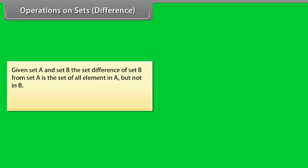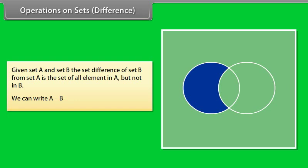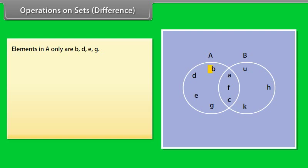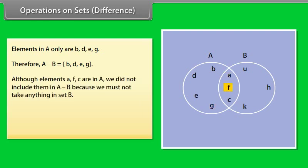Operations on sets — Difference. Given set A and set B, the set difference of set B from set A is the set of all elements in A but not in B. We can write A minus B. Look at this Venn diagram. This shows us the difference of the two sets S1 and S2. Elements in A only are B, D, E, G. Therefore, A minus B = {B, D, E, G}. Notice that although elements A, F, C are in A, we did not include them in A minus B because we must not take anything in set B.